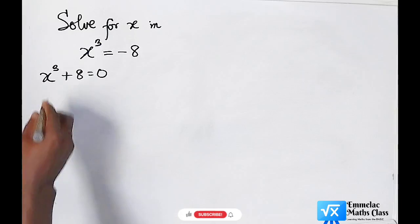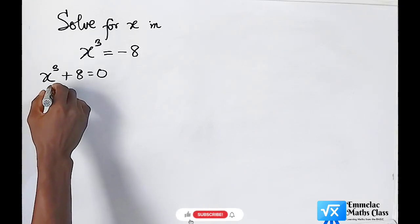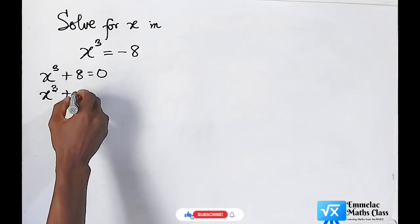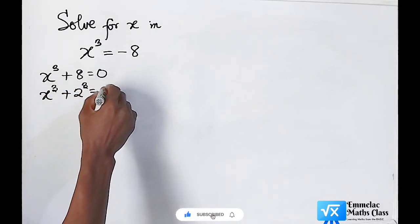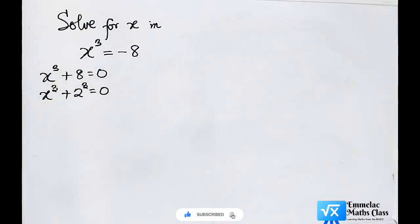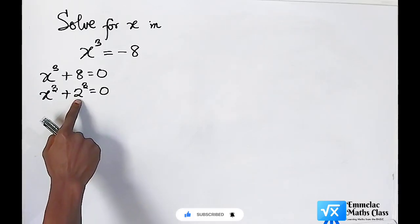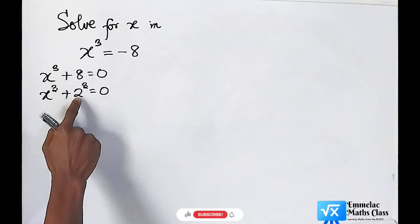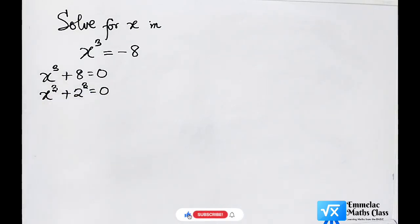To simplify further, this can be written as x³ + 2³ = 0. Now we actually reduce 8 to the base of 2, as 2 raised to the power of 3 will give us 8.